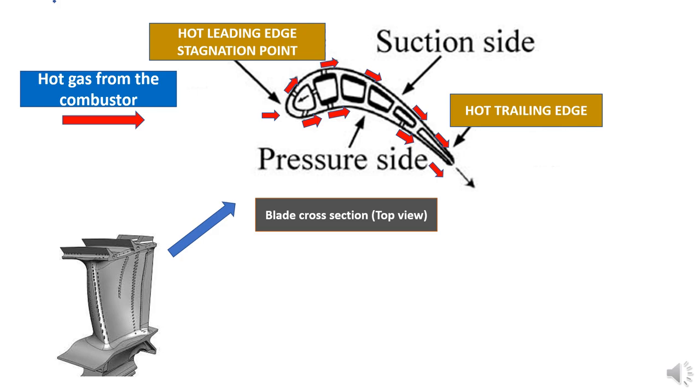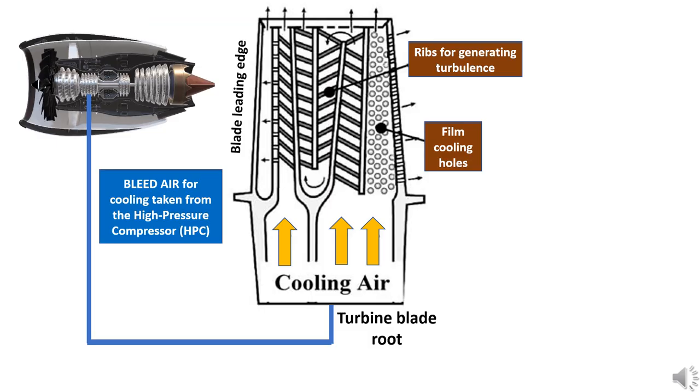The trailing edge is the next hottest part of the blade as it is thin with less material to conduct away the heat. The air from the high pressure compressor section is taken as bleed and enters through the root of the turbine blades and the internal passages machined inside. As this comparatively cooler air passes through the passages, convection cooling takes place.